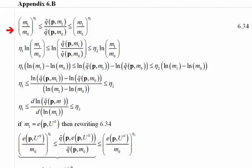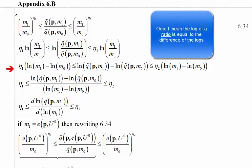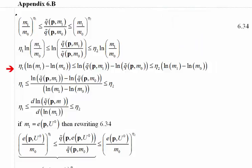Equation 6.34 is not very intuitive, so let's see how on earth they get this. We start by simply taking the log of both sides of the expression, and that brings the eta terms down. We then expand out the logs, noting that the log of a product is equal to the sum of the logs, and that's where we get to this line. Dividing both sides by the difference in the logs between m1 and m0, we obtain this expression, which is starting to look more familiar, with eta1 and eta2 bounding that expression.